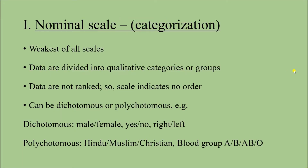The first scale we are going to discuss is the nominal scale, where we categorize different data. This is the weakest of all four scales. Data are divided into qualitative categories or groups, and data are not ranked, so the scale indicates no particular order. Nominal scale can be dichotomous, where we have two options, and polychotomous, where you have three or more options.